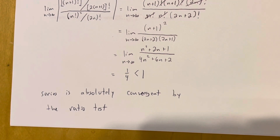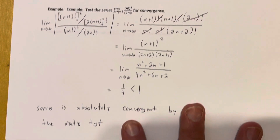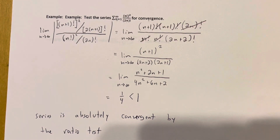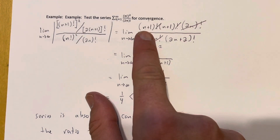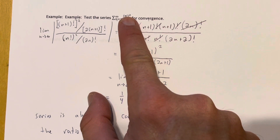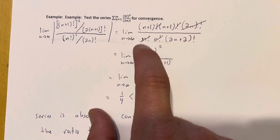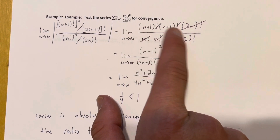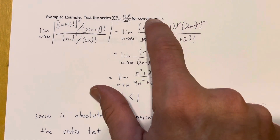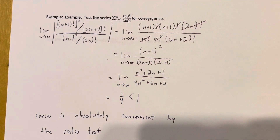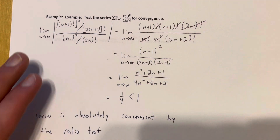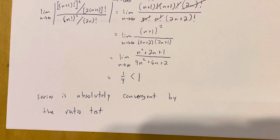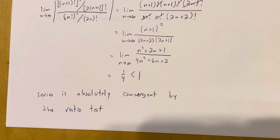That was a particularly tricky example, but the key thing to pay attention to is how those factorials cancel. If you get a factorial squared or cubed, it's better to write out all of those factors so you can match them and see how they cancel. In the next video, we're going to cover the root test.